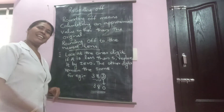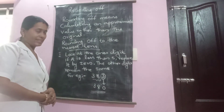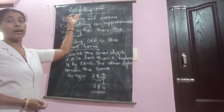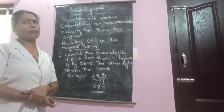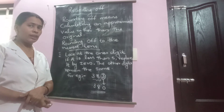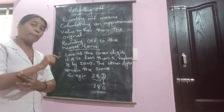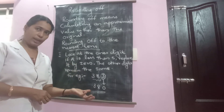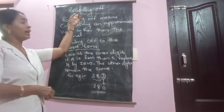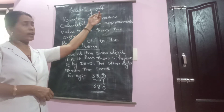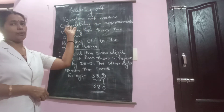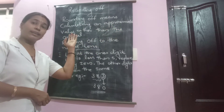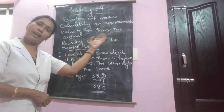Good morning children. Let us begin our today's class. Today we are moving to another topic called rounding off. What is meant by rounding off numbers? We have to find an approximate value for the given number. Rounding off means calculating an approximate value rather than the original value.